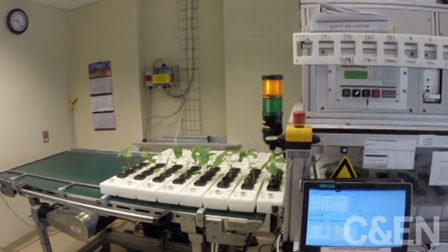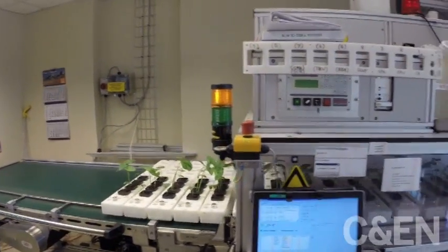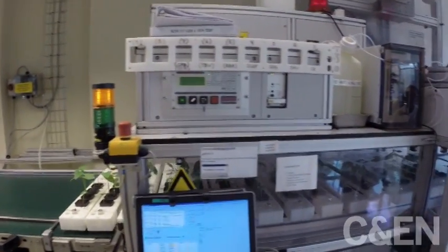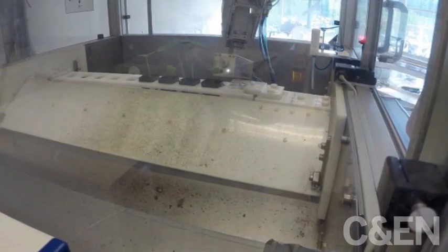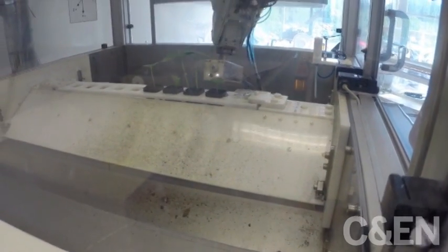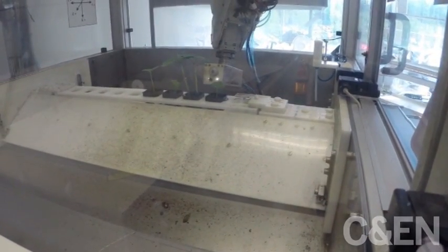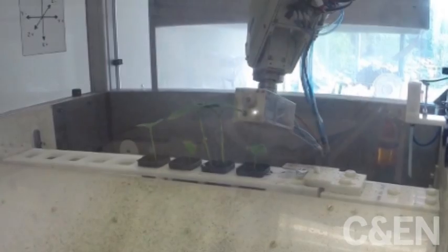When BASF scientists are ready to evaluate their insecticides, the bugs are introduced to test plants, and together they enter a machine that sprays the given insecticide. Researchers observe how effective the treatments are in killing the pests but sparing the plants.